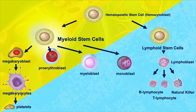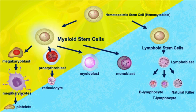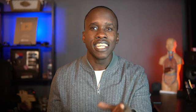The pro-erythroblast will lose its nucleus and go through more differentiation to become a reticulocyte, which will further differentiate to become the erythrocyte. That's the red blood cell — this is how we get red blood cells. There's a lot of terminology here, but once you chart it out a few times, you're going to get it.